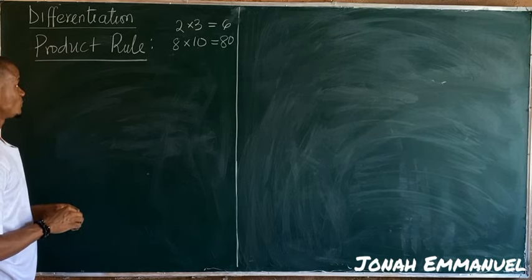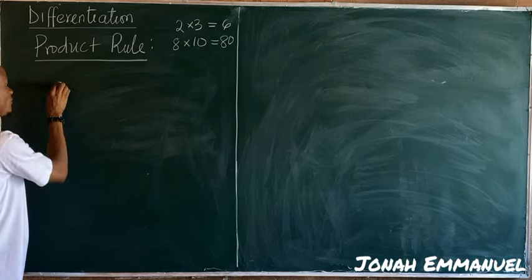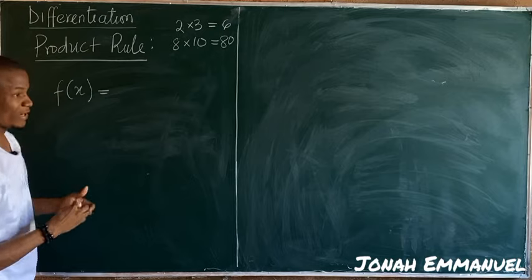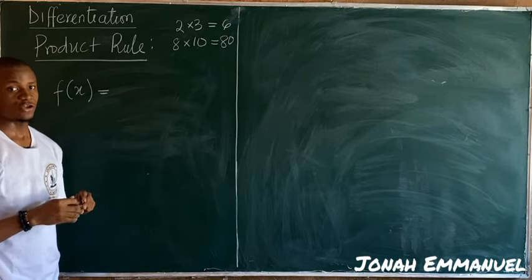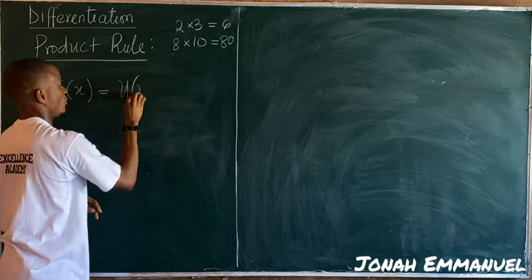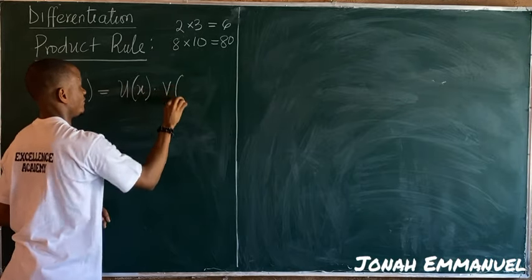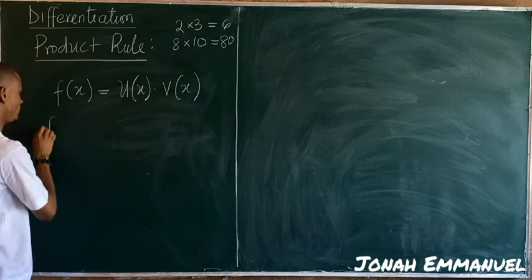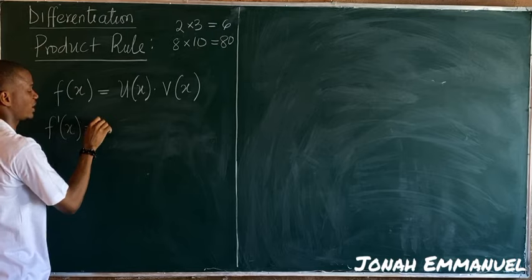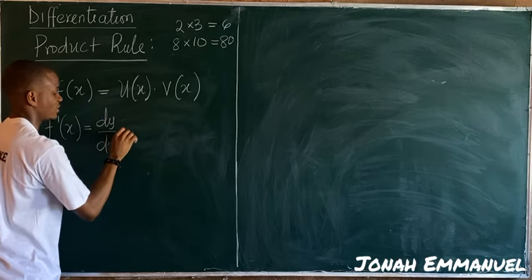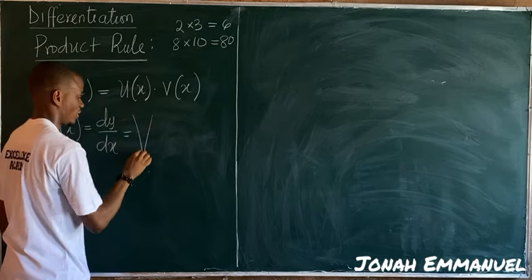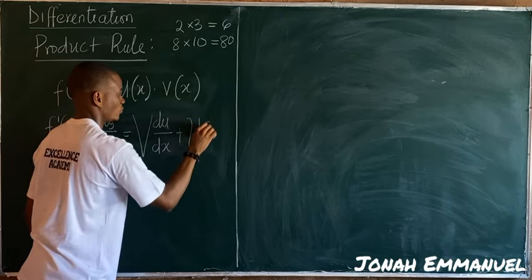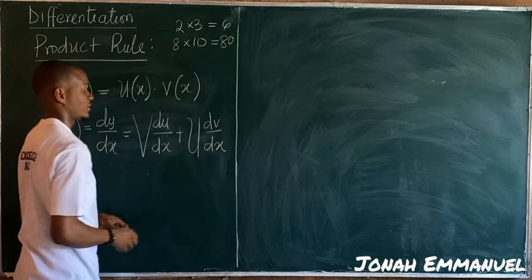We use product rule when we have terms that are multiplying each other. Given a function f(x) expressed as the product of u and v, such that u and v are both functions of x — that is, u(x) multiplied by v(x) — from product rule we have that f'(x), also known as dy/dx, is equal to v·du/dx plus u·dv/dx.